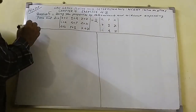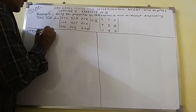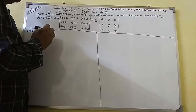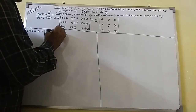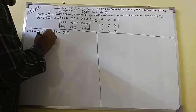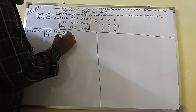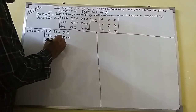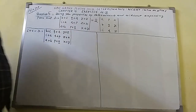Here I shall write LHS. LHS is equal to the determinant — opening vertical line. The elements of the first row: B plus C, Q plus R, Y plus Z; the elements of the second row: C plus A, R plus P, Z plus X; the elements of the third row: A plus B, P plus Q, X plus Y. Closing vertical line.